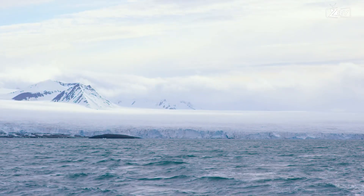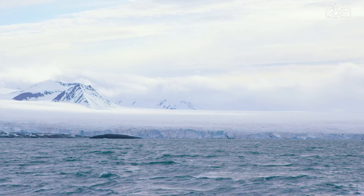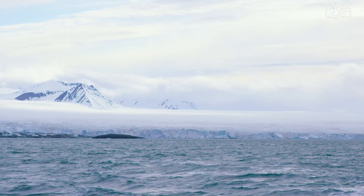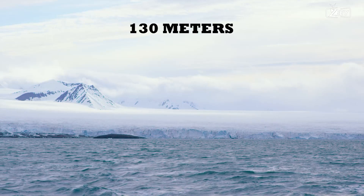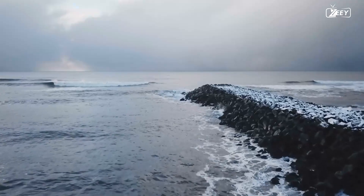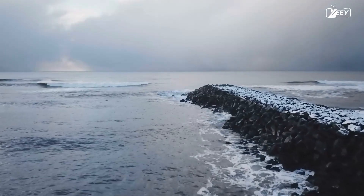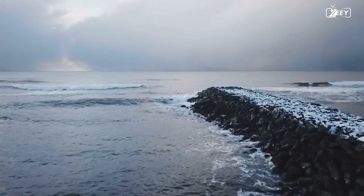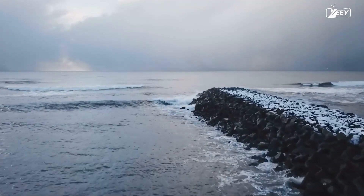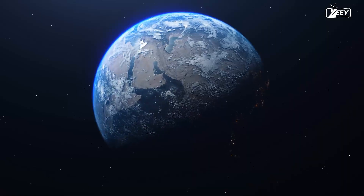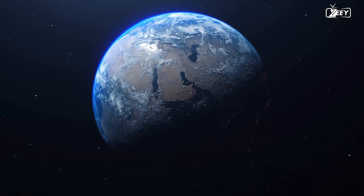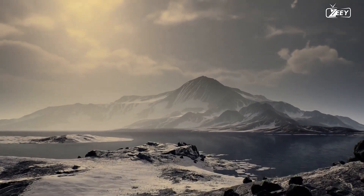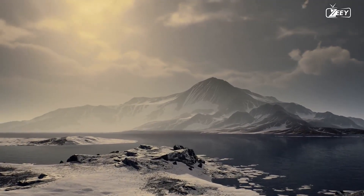Because today's water in the oceans was confined in enormous glaciers 20,000 years ago, sea levels dropped by more than 130 meters. The decline in sea level exposed enormous parts of Earth that are now several meters below sea level, increasing the size of continents, several islands, and even linking areas that are now separated by oceans and seas.